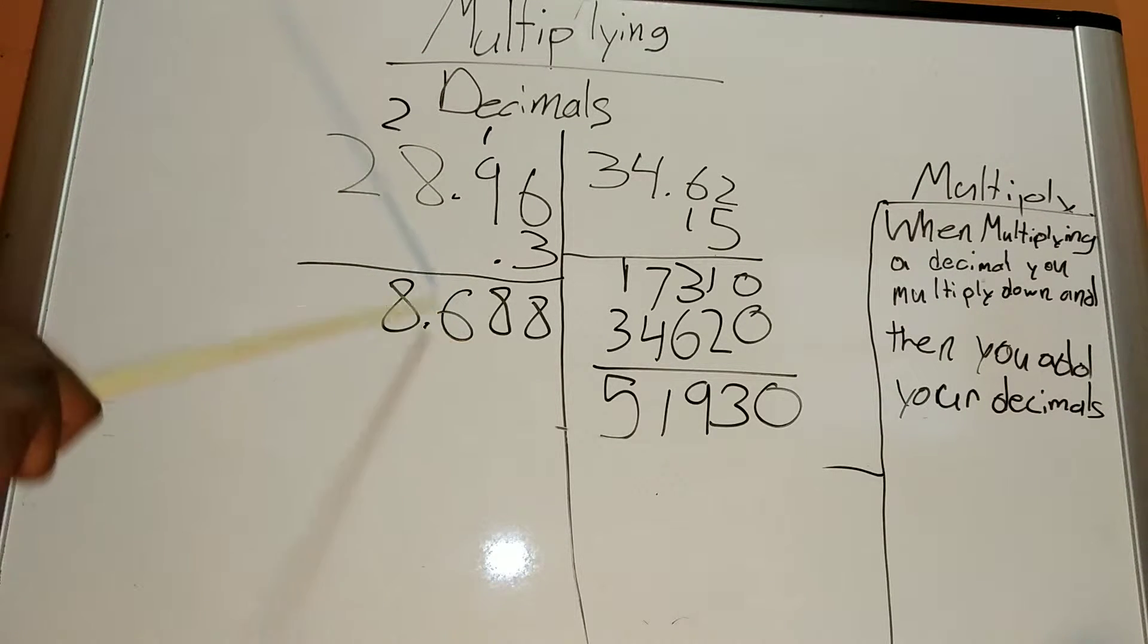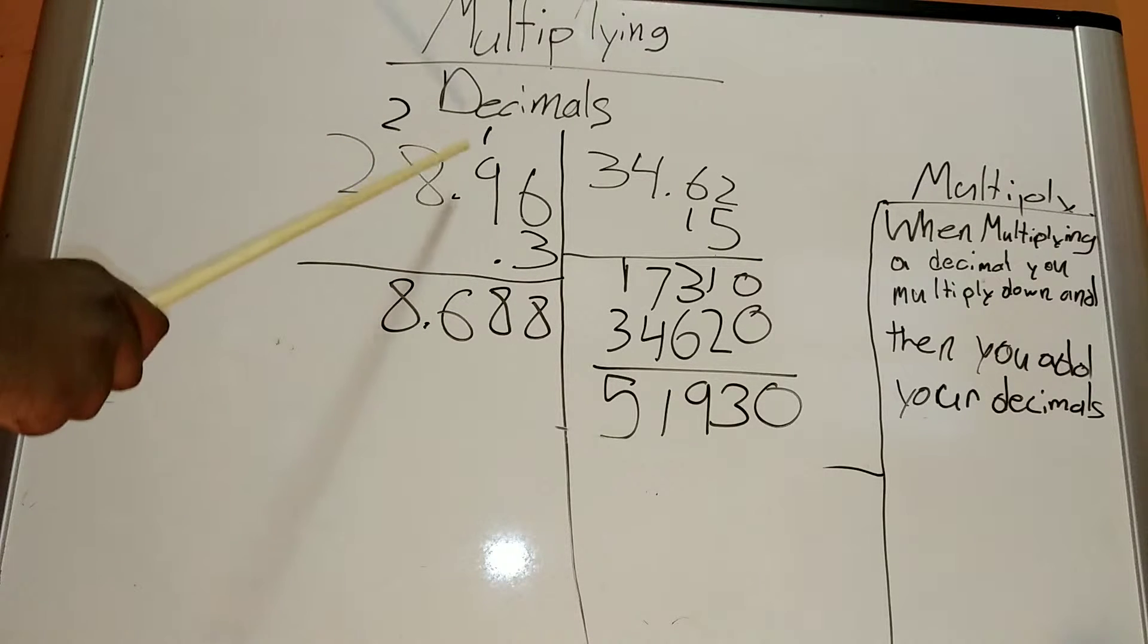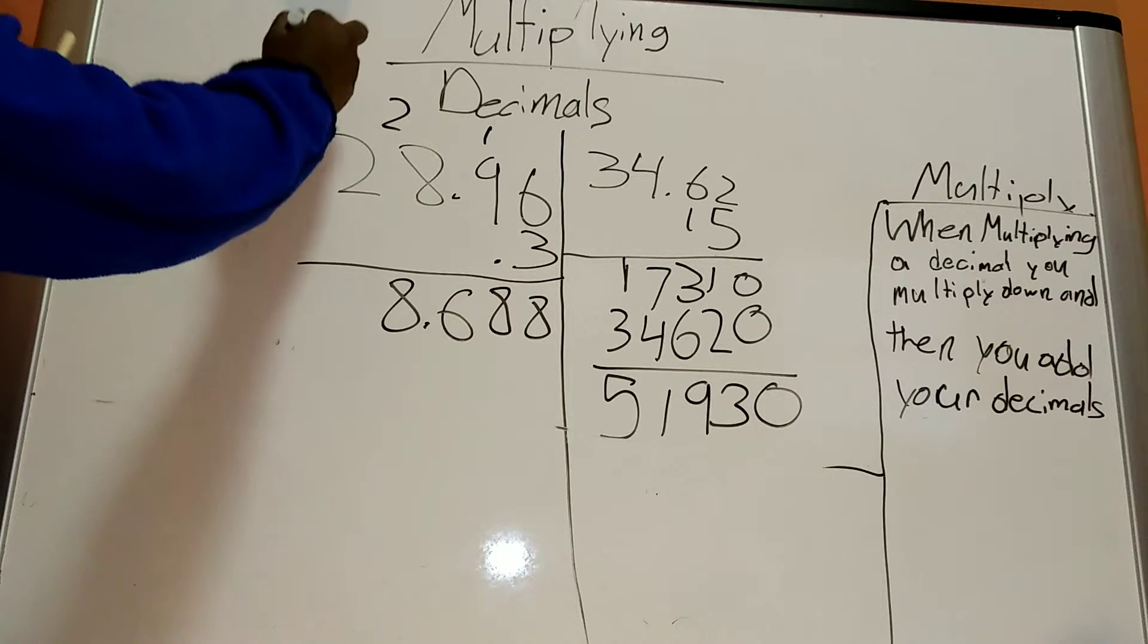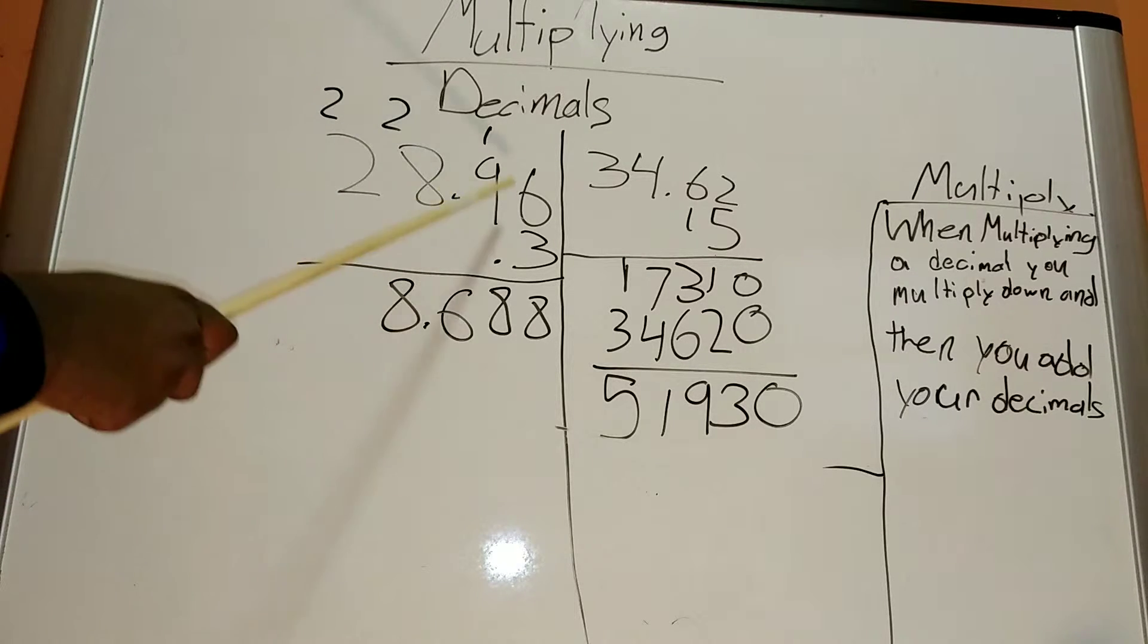You put the 6 here. Plus 2 is 24. You put the 6 here. Put the one there. And you put the 2 here. And then you have 3 times 2 equals plus 2 equals 8. But then we also have a decimal.